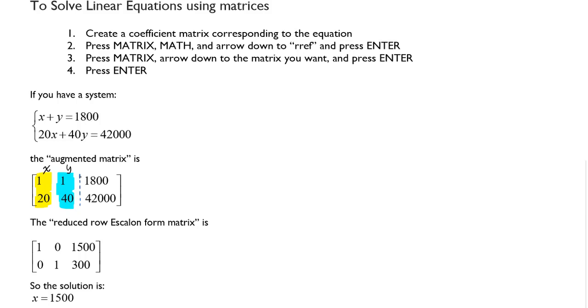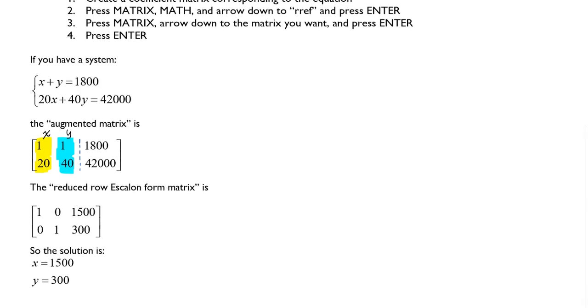The reduced row echelon form of the matrix is [1, 0, 1500; 0, 1, 300]. So the solution given is x = 1500 and y = 300.